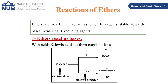Ethers are nearly unreactive. The C-O-C linkage is very stable towards bases, oxidizing agents, or reducing agents. However, ethers can act as a base because the oxygen atom between two alkyl or aryl groups has lone pairs of electrons, making it an electron donor. When reacting with an acid, the acid protonates these lone pairs on oxygen, giving an oxonium ion. Ethers also react with Lewis acids, which have a vacant orbital that accepts the lone pair, also forming oxonium ions.